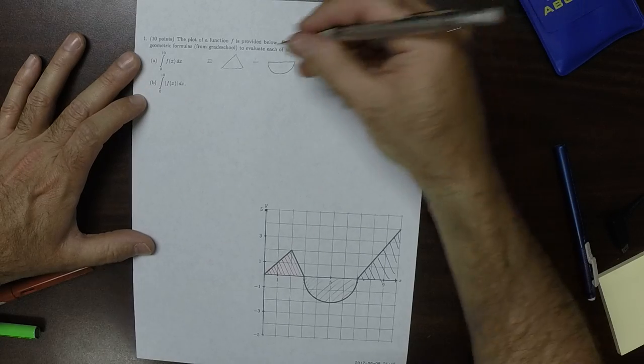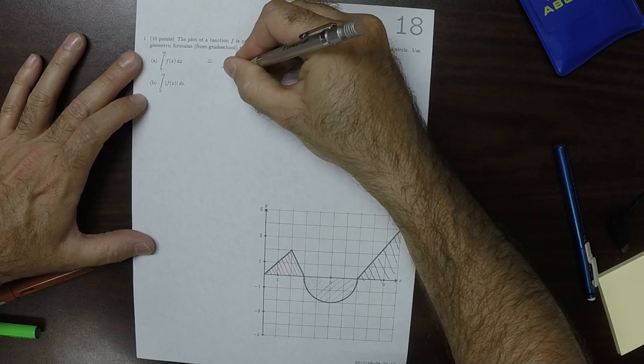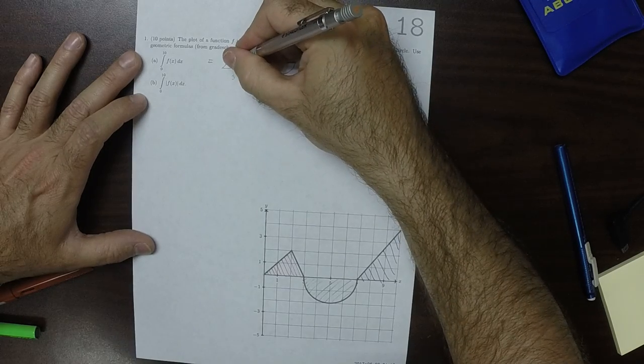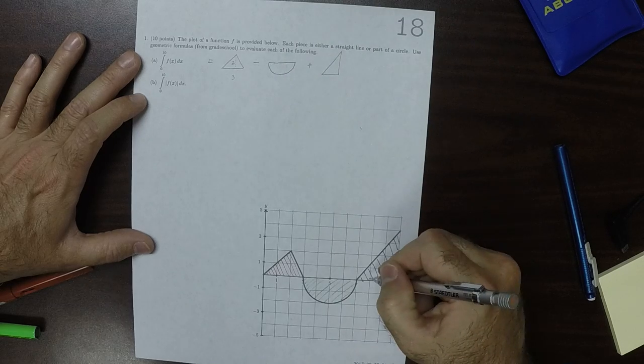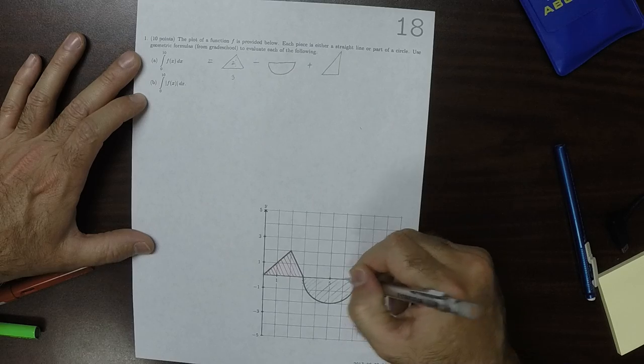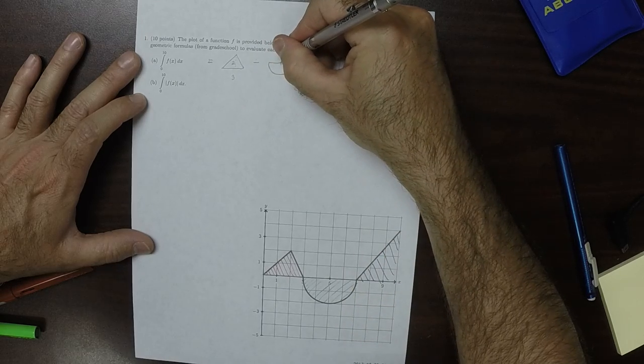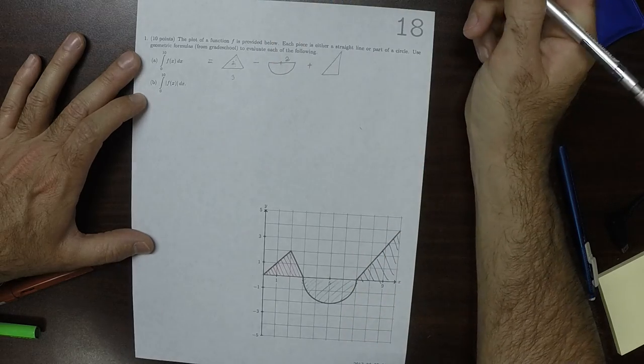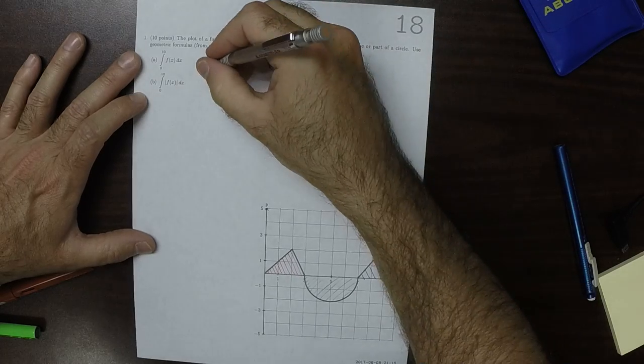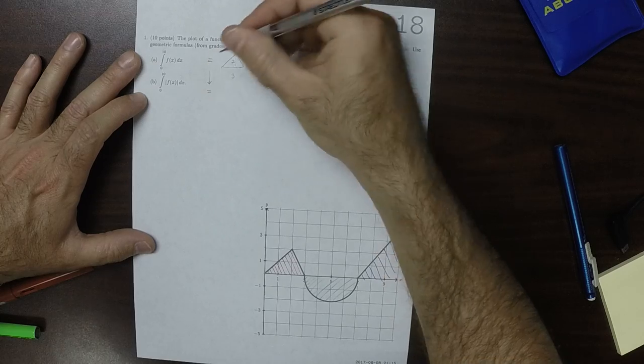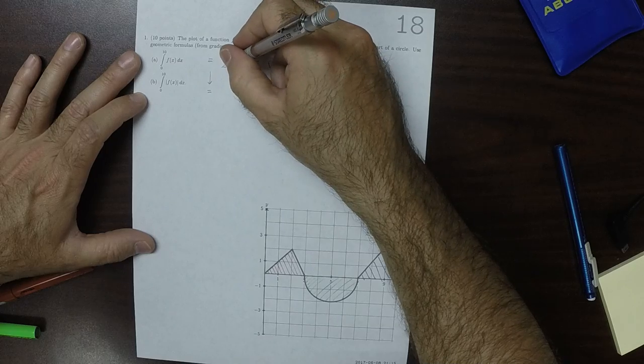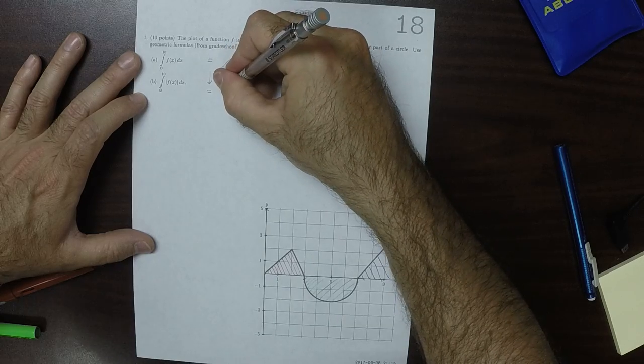So the base of this is 3 and its height is 2. This is radius 2, and then this is 3 and 4. So the area would be base times height over 2. So 3 times 2 is 6 over 2 is 3.